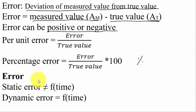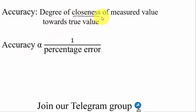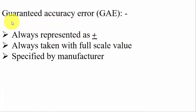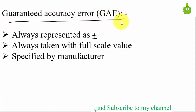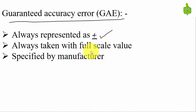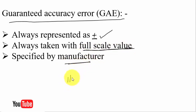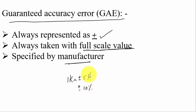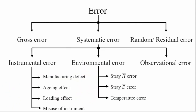Error can be classified as static error, which is not a function of time, and dynamic error, which varies with respect to time. Accuracy is the degree of closeness of measured value towards the true value, and is always inversely proportional to percentage error. Guaranteed Accuracy Error (GAE) is very important for engineering service examinations — it can be positive or negative, and is always calculated with respect to full scale value, specified by the manufacturer, e.g., 1 kΩ ±5% or ±10%.